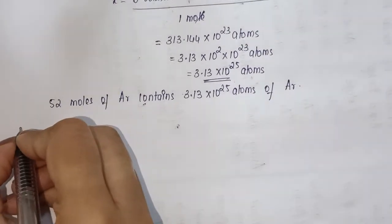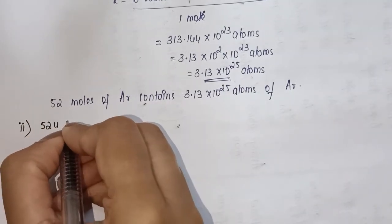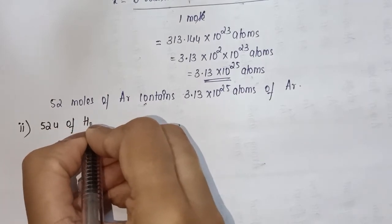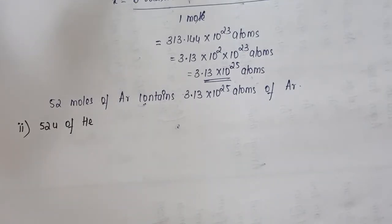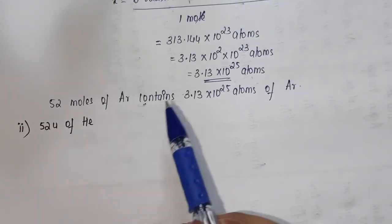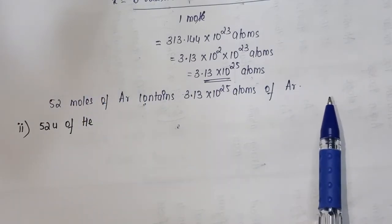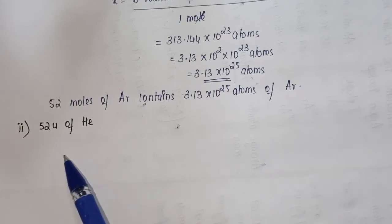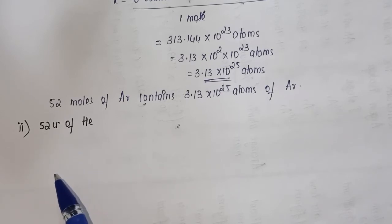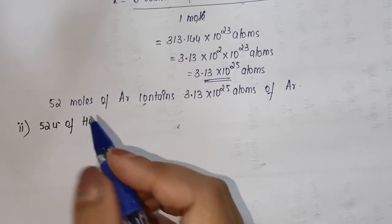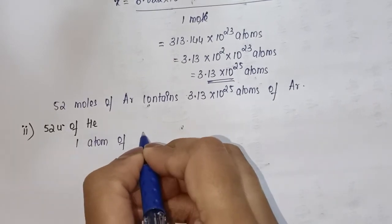The second question is 52 amu of helium. Remember: when the question is in terms of atomic mass units, we calculate for atoms; when it is in terms of grams, we calculate in terms of moles. Since it is in amu here, we calculate in terms of atoms.